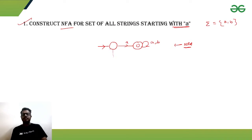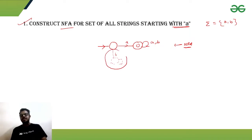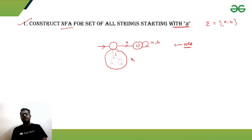If you remember the DFA, from the initial state, if we get symbol 'b' we should go to some dead state — a state from which we cannot get back. For DFA we need to explicitly mention the dead state, but for NFA we don't need that. For NFA, only these two states are enough to handle all the dead configurations.